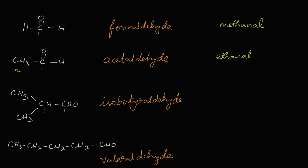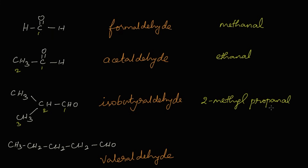For the third structure, we select the longest chain — one, two, three carbons. A methyl group is attached at the second carbon, so we name it 2-methyl. The straight chain has three carbons — propane — and we replace 'e' with AL because CHO is the functional group. The IUPAC name of isobutyraldehyde is 2-methylpropanal.